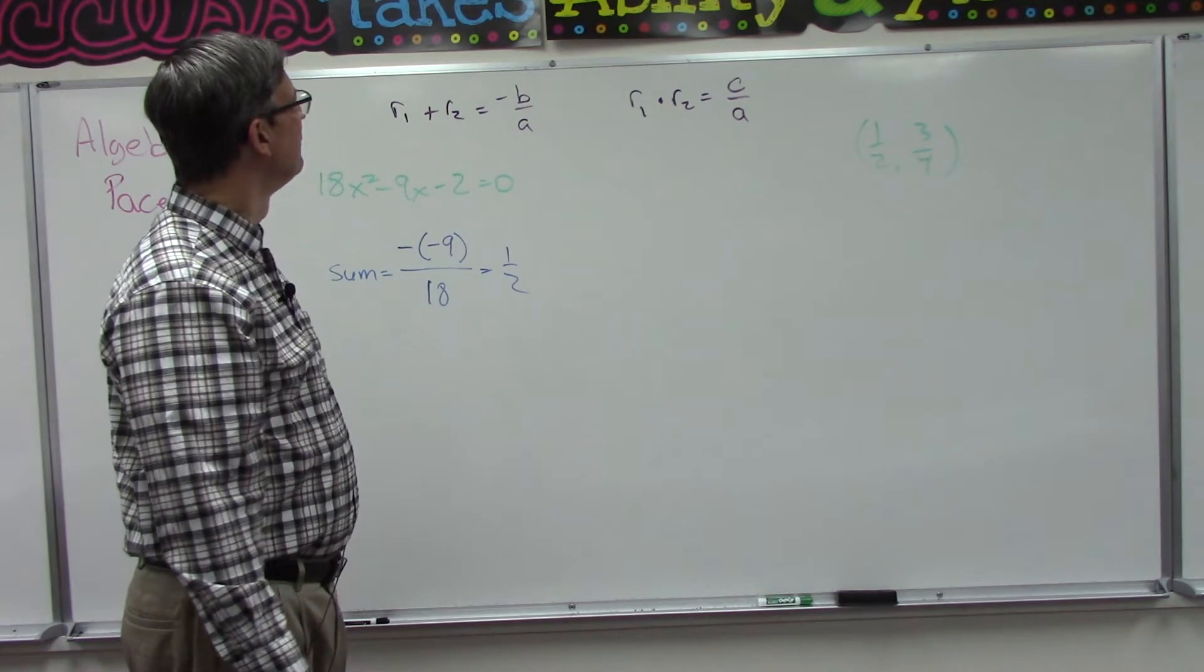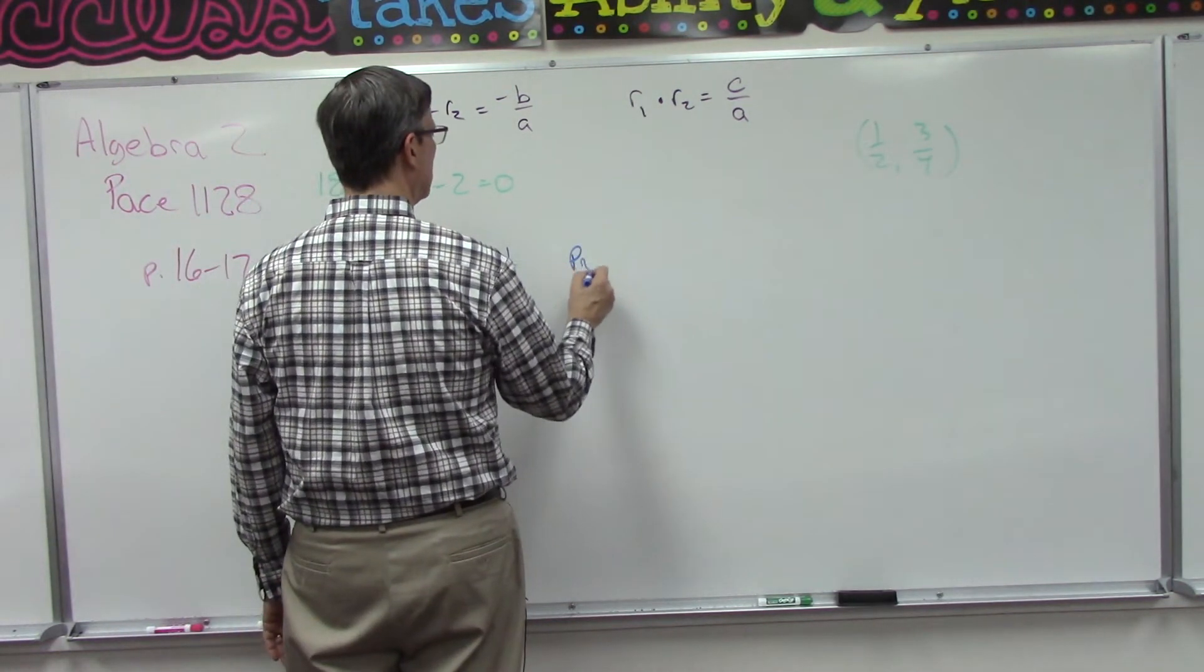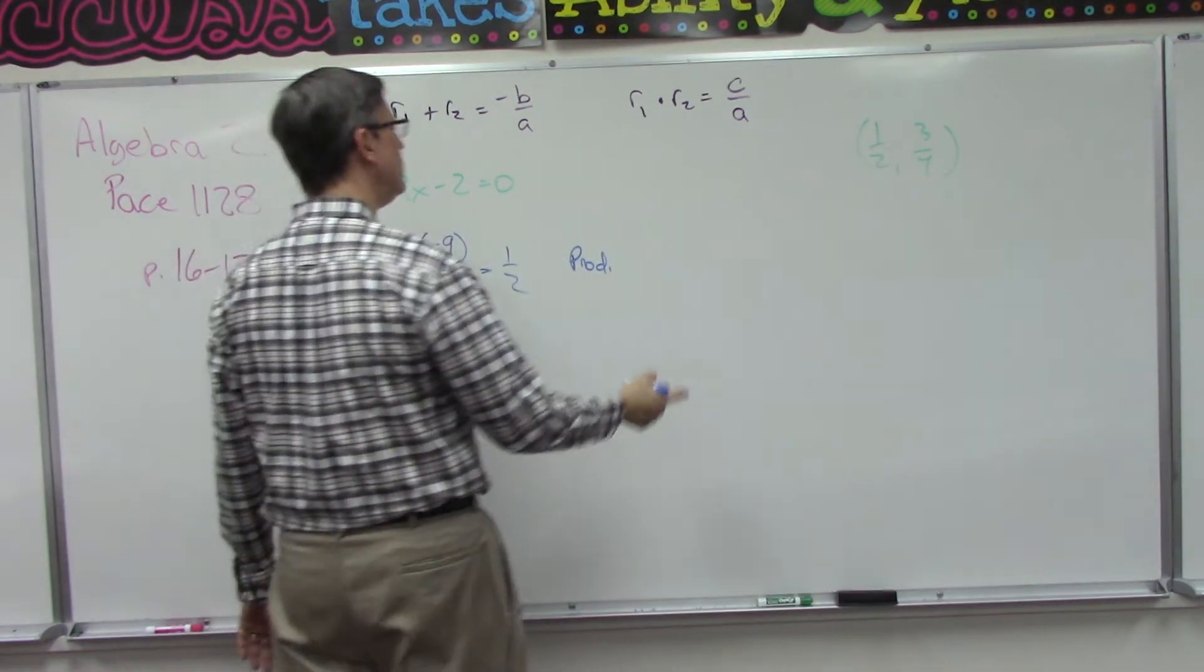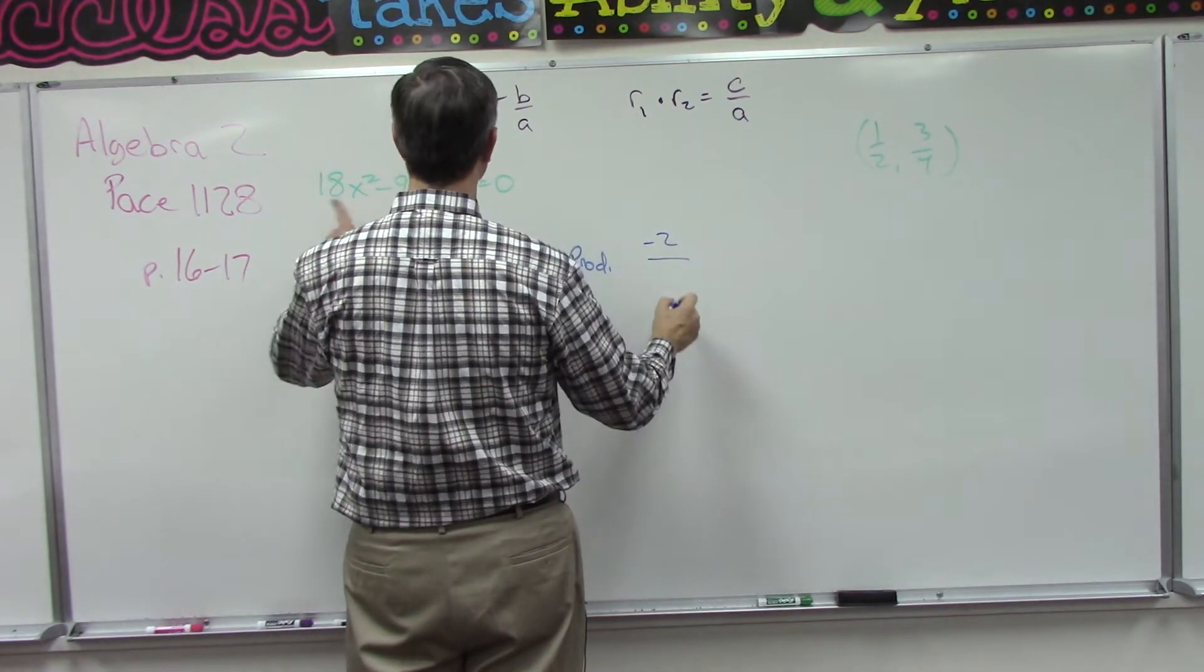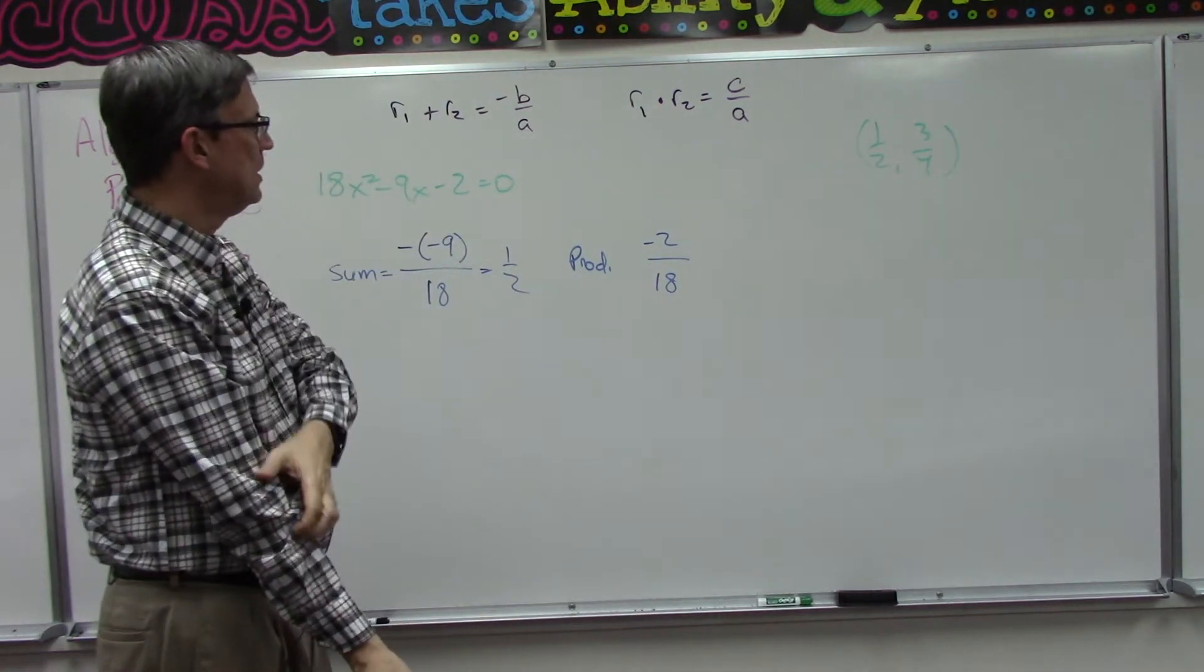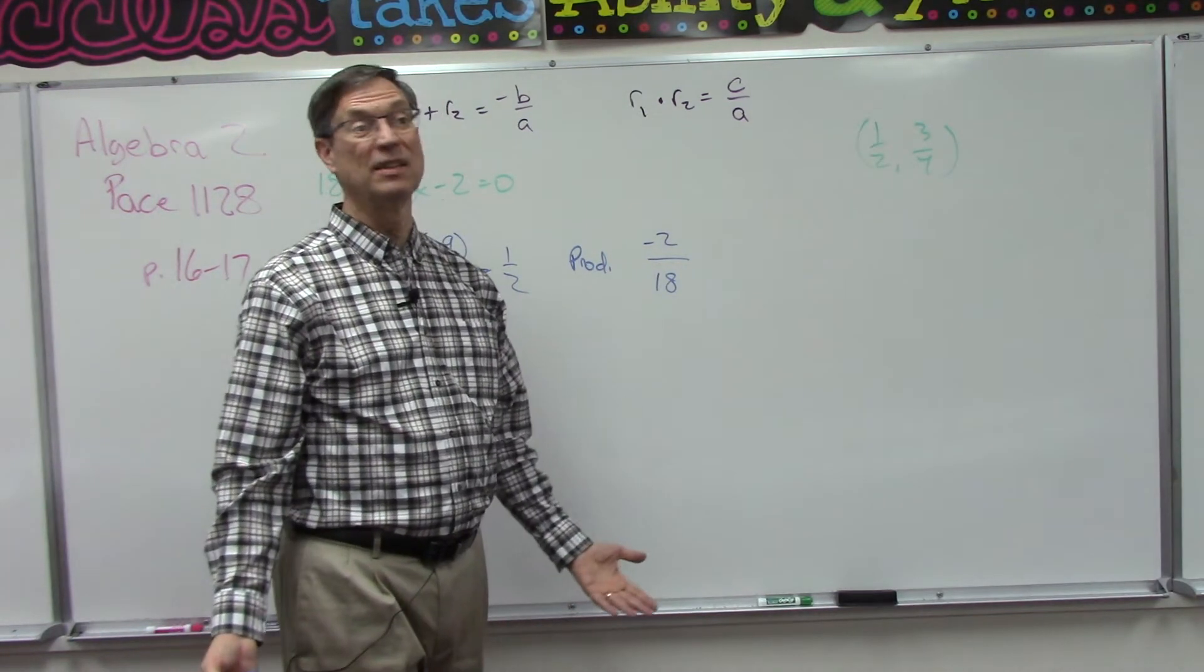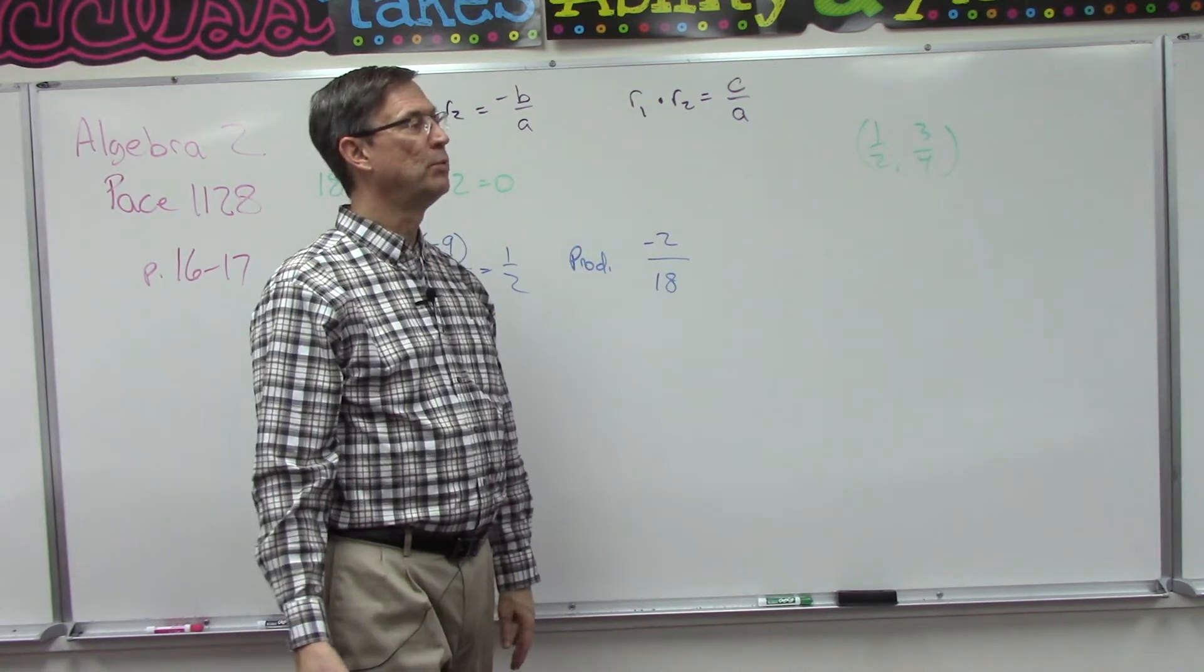Then it says the product would be - if we multiply the two roots together, we should get whatever the value of c is, which in this case is negative 2, over the a value, which is 18. If you reduce this, you'll get a fraction. Got to keep the negative sign. That's it, that's all they're looking for. You're getting two answers: one's the sum, one's the product.